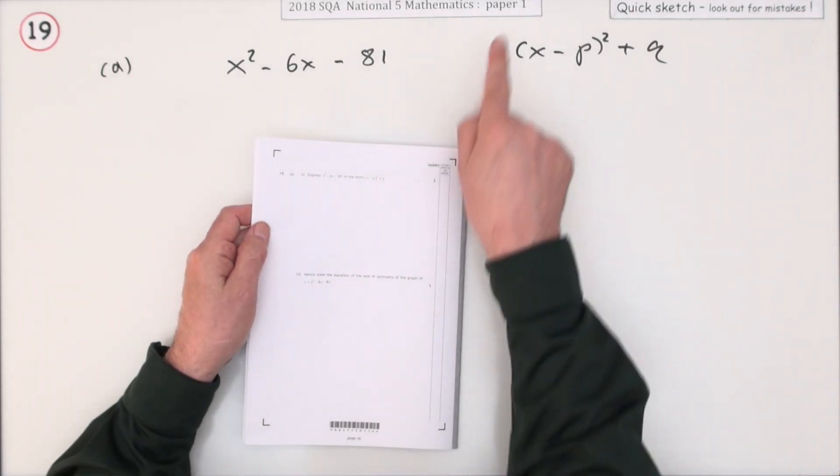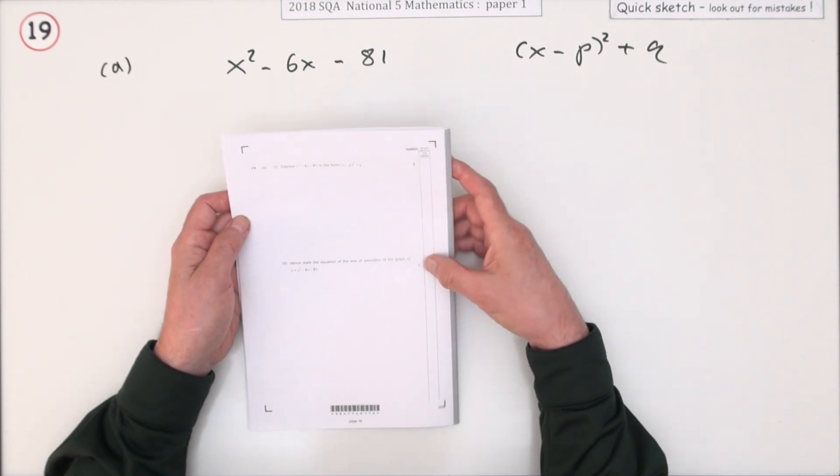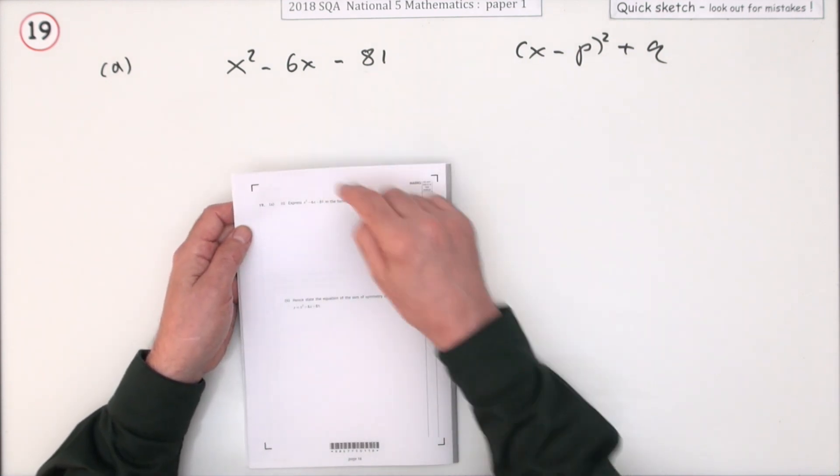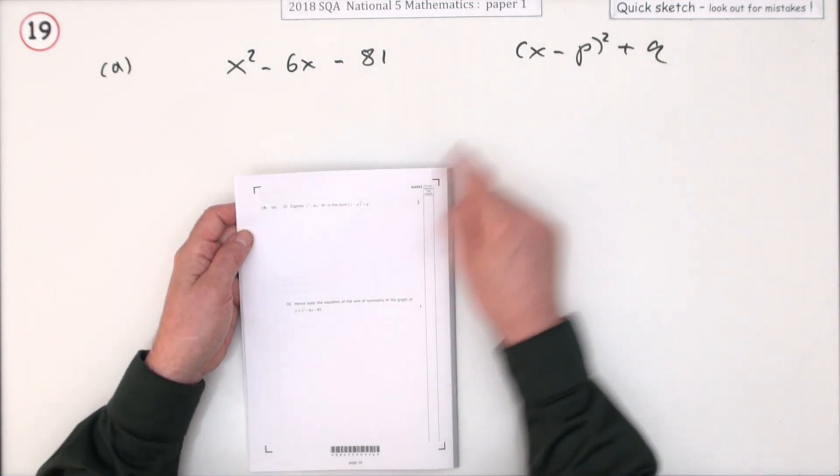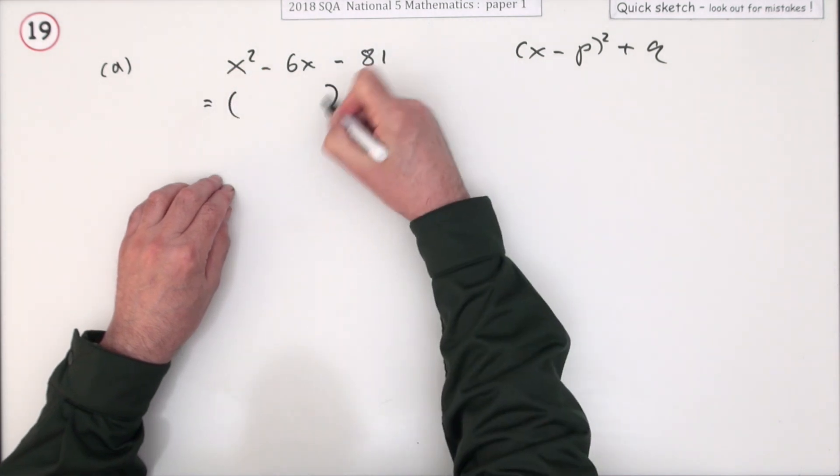Number 19 then. The last question in paper 1 of the 2018 National 5. It's worth seven marks here and it's in the three parts. Well what's the first part? Take this quadratic and express it in this form. In other words complete the square.